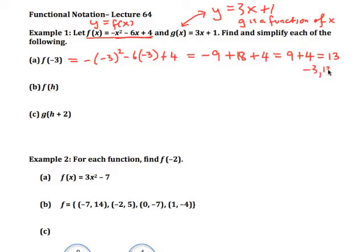What if I want f of h? Well I don't know what h is, but we're going to apply the process of f on h instead of on x. So wherever x is I replace it with h, so it would be negative h squared minus 6h plus 4.